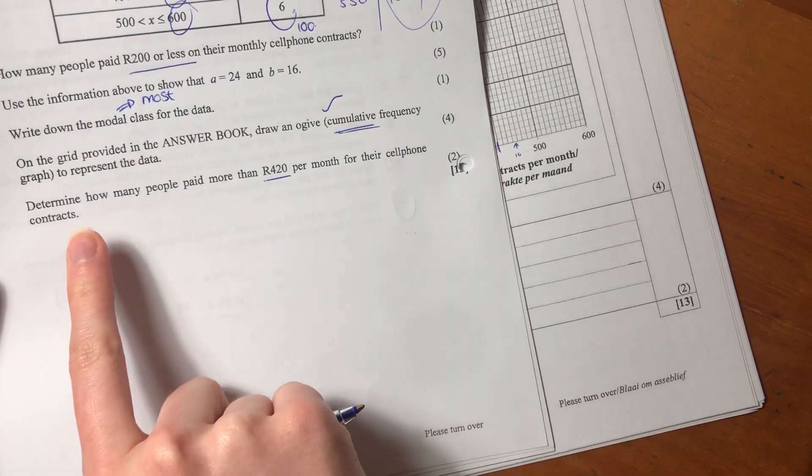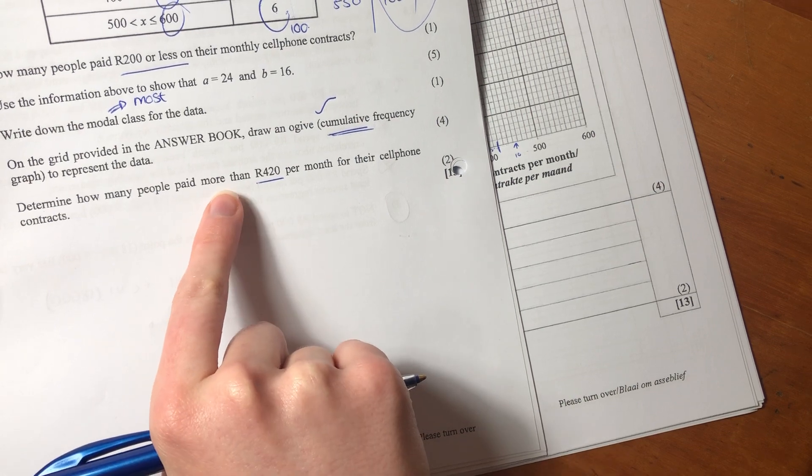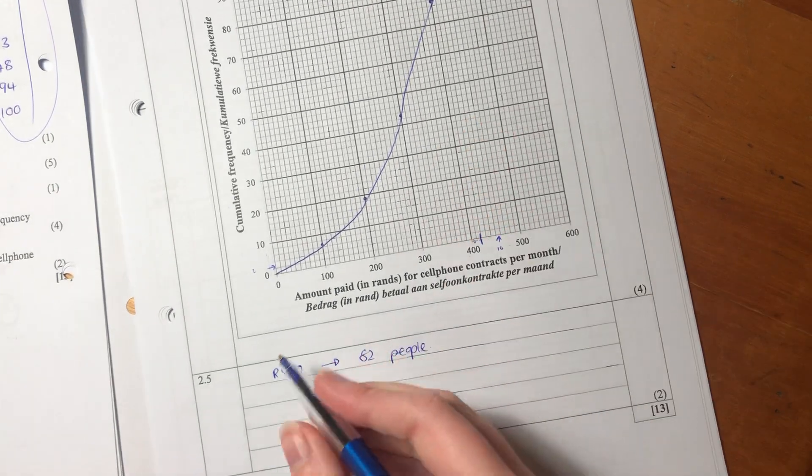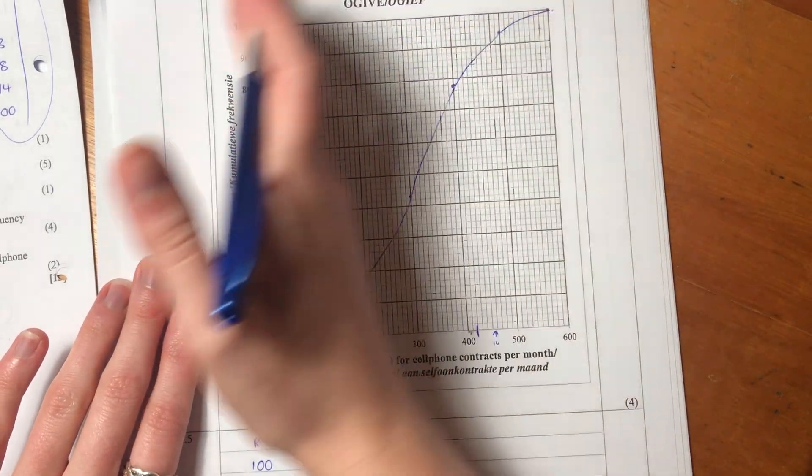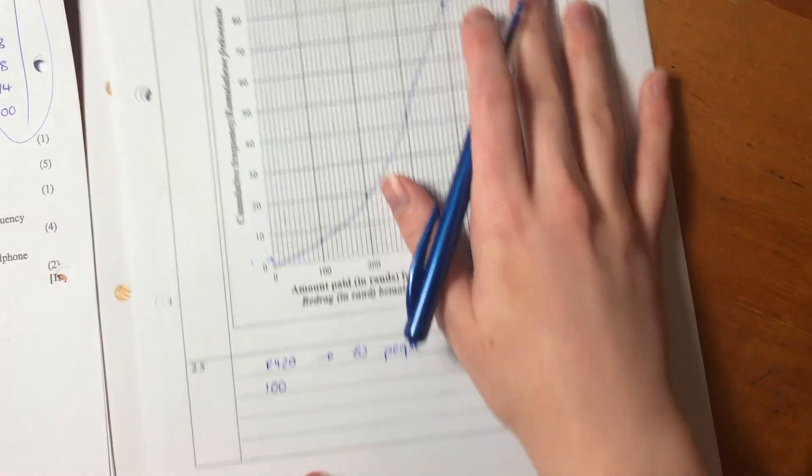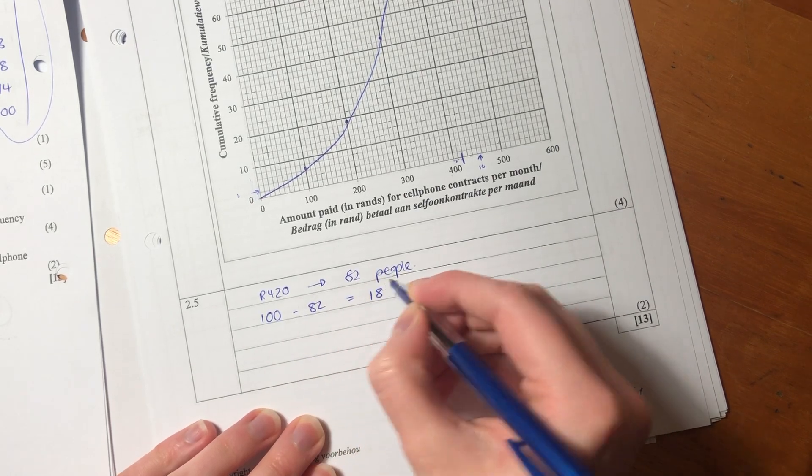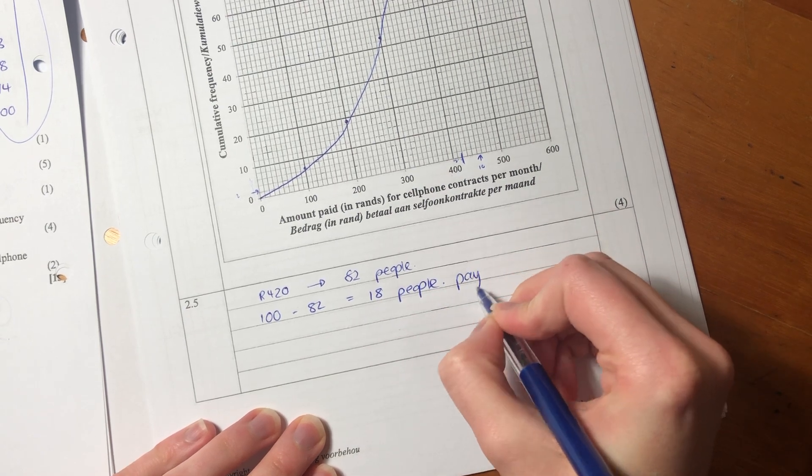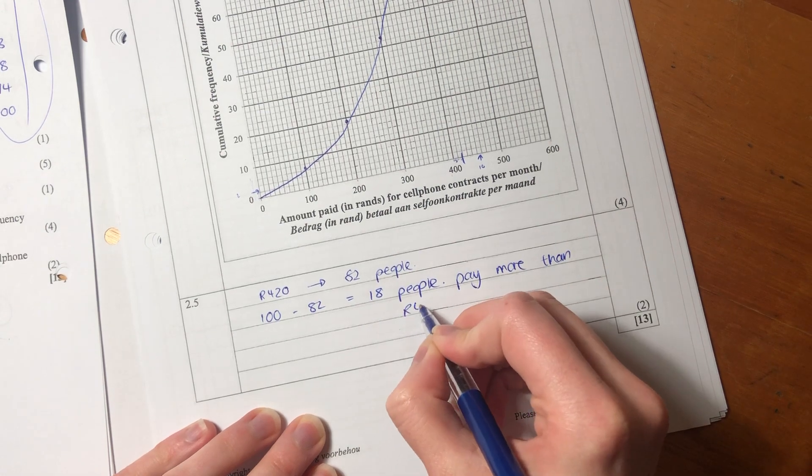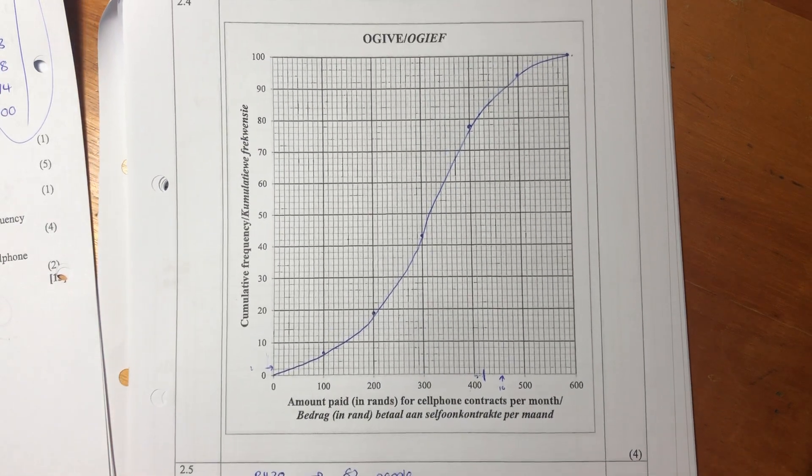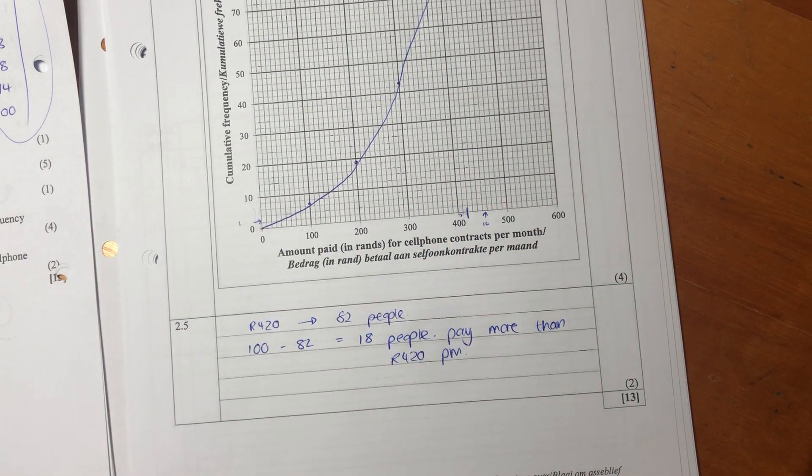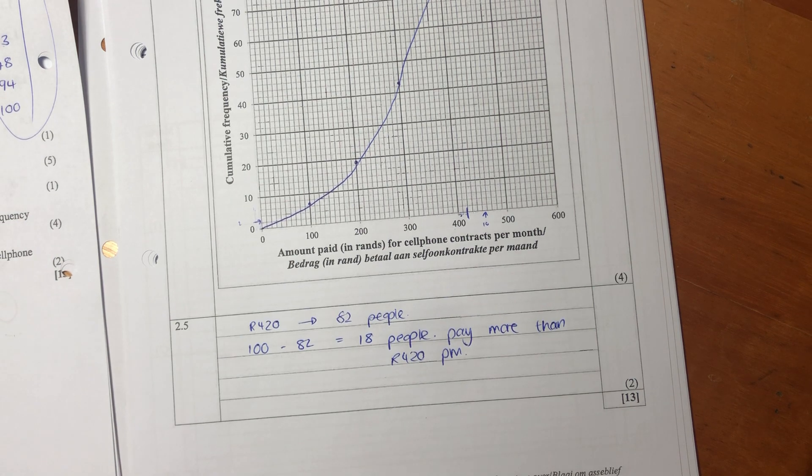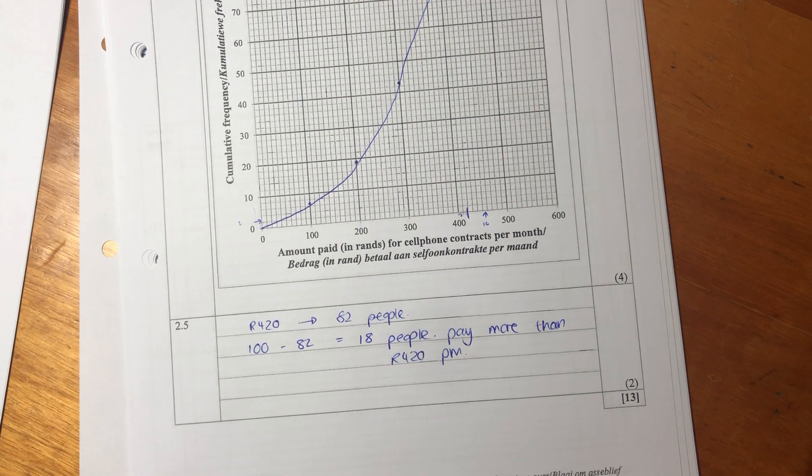It says: determine how many people paid more than 420 per month for their cell phone contract. We know there's 100 people, and we know that 82 of them pay 420 rand or less every month, because there's everyone on this side of the graph. But they're asking for the people this side of the graph. So 100 minus 82 gives me 18 people. 18 people pay more than 420 rand per month. What they're asking you here is whether you can display your understanding of ogive - draw the ogive, but then also display some understanding and interpretation of what's going on. So that's the majority of the stats of this paper done. We're going to move on to some more analytical geometry and some trig. I hope that was helpful, and I'll see you in the next one.